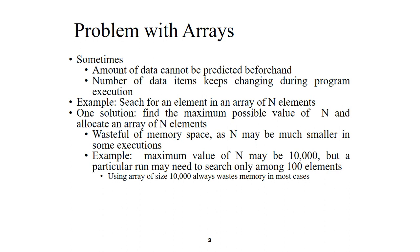We can have dynamic arrays. A dynamic array means a kind of array whose memory size can be increased or decreased at runtime. But actually we should use the name 'dynamic memory allocation' when using this concept. One solution is to find the maximum possible value of n and allocate an array of n elements — but this is wasteful of memory space, as n may be much smaller in some executions. For example, the maximum value of n may be 10,000 but a particular run may need to search only among 100 elements, wasting most of the space. In such cases we need dynamic memory allocation.